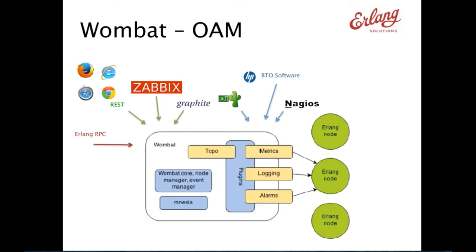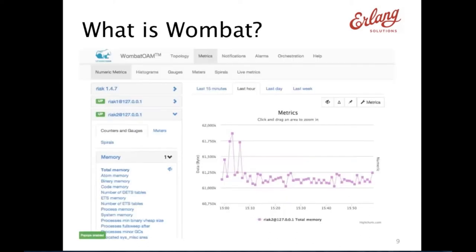The way it works is that in Wombat, you provide a node name and a cookie, and Wombat will automatically connect to that node, visualize what's in there, and based on the applications running in that node, inject agent code. No extra work needs to be done — you don't need to include any Wombat-specific applications in your system. So even if your system has been live for a few years, you can still start deploying Wombat and get full visibility.